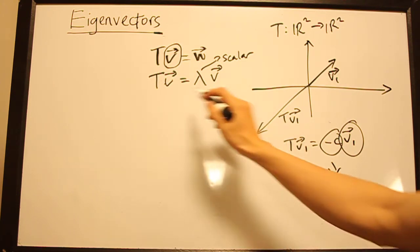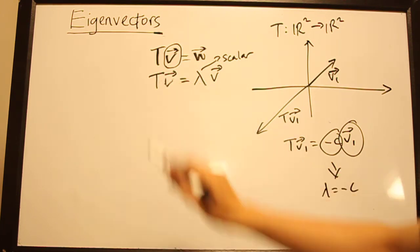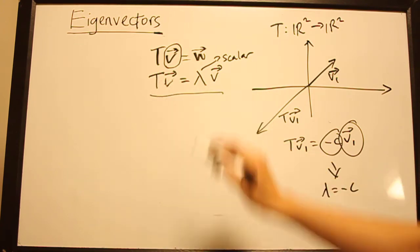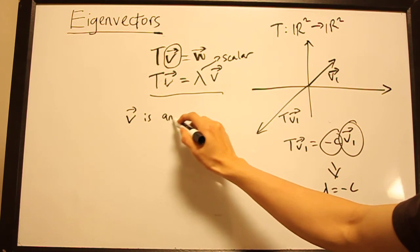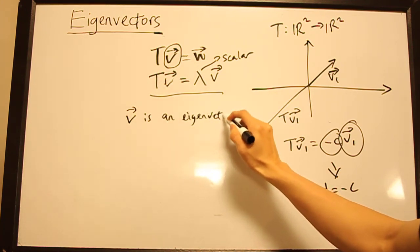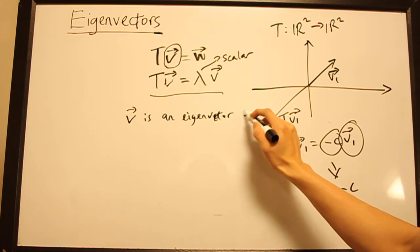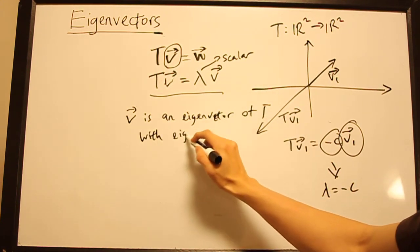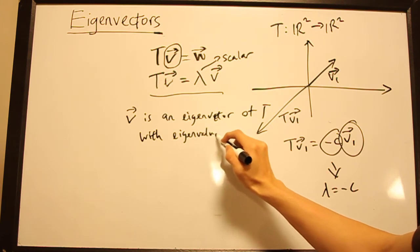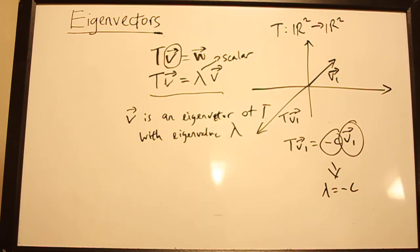So if we can find a vector V that satisfies this, we say that V is an eigenvector of T with eigenvalue lambda. And it's standard convention to call the eigenvalue lambda.